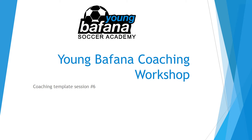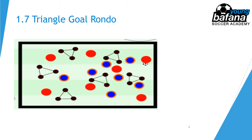The first exercise is the triangle goal rondo — a possession game created to school players' orientation on the field, get them to change the point of attack, and play as a triangle. The field is rectangular; for an under-17 or under-18 age group I'd recommend a field measuring 25 to 30 by 40 meters. It's important the field is rectangular to link training games as much as possible to the actual game.